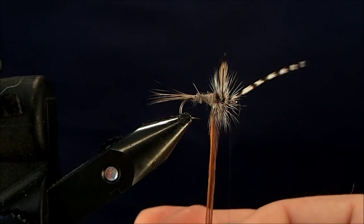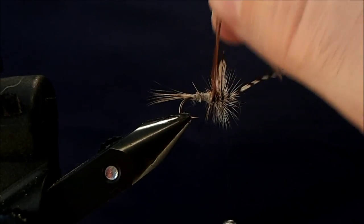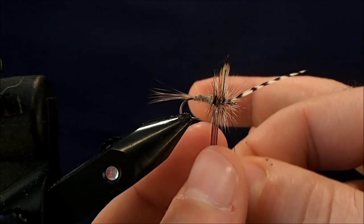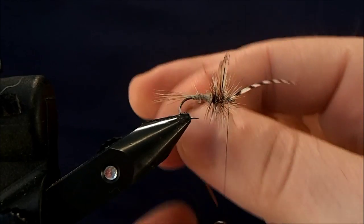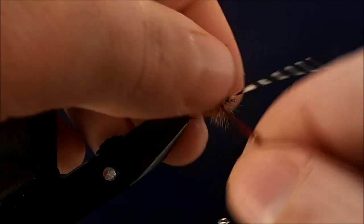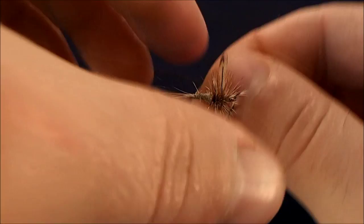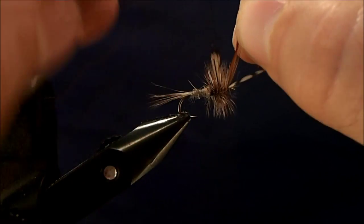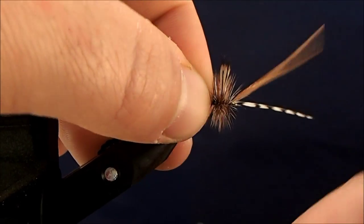And I'm going to take my brown. I'm going to weave this in between. And again, doing the same two or three wraps behind and two or three wraps in front. Bring it back into my tie-in point and make some securing wraps there.